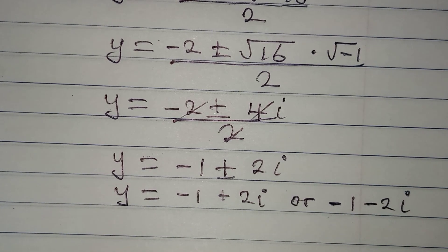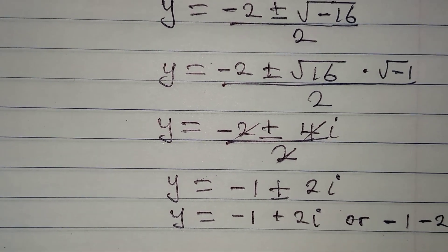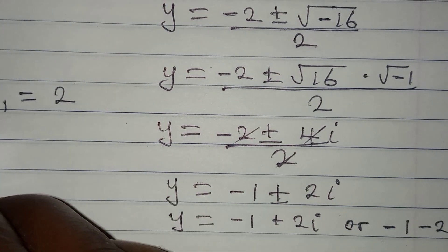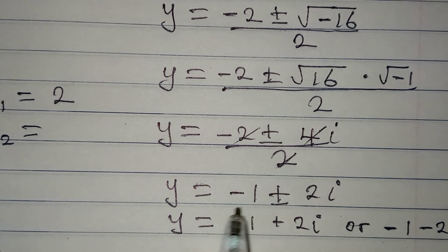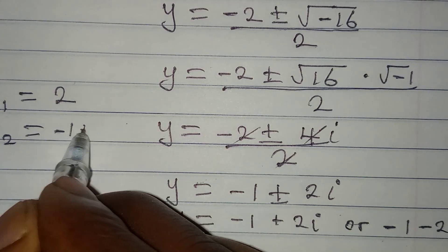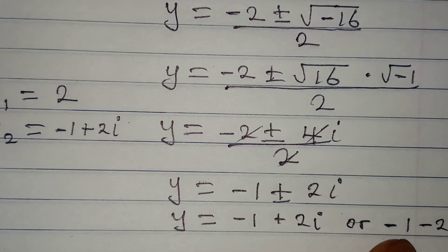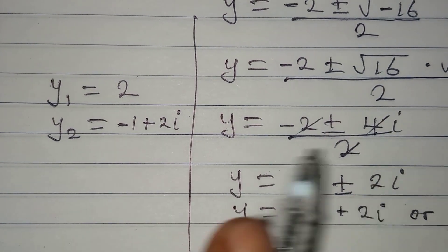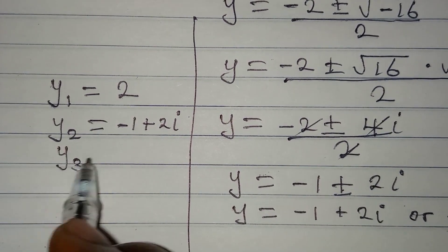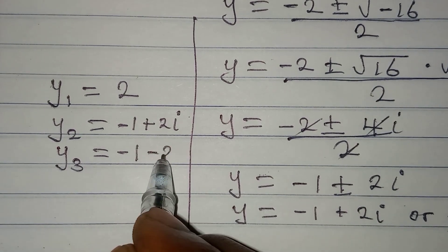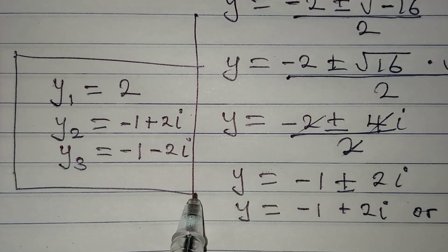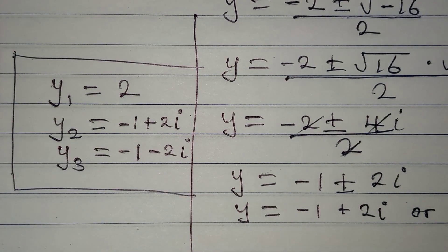These are the two other solutions. Bringing all three solutions together: y₁ equals 2 (the real solution), y₂ equals minus 1 plus 2i, and y₃ equals minus 1 minus 2i. The first solution is a real solution while the other two are complex.